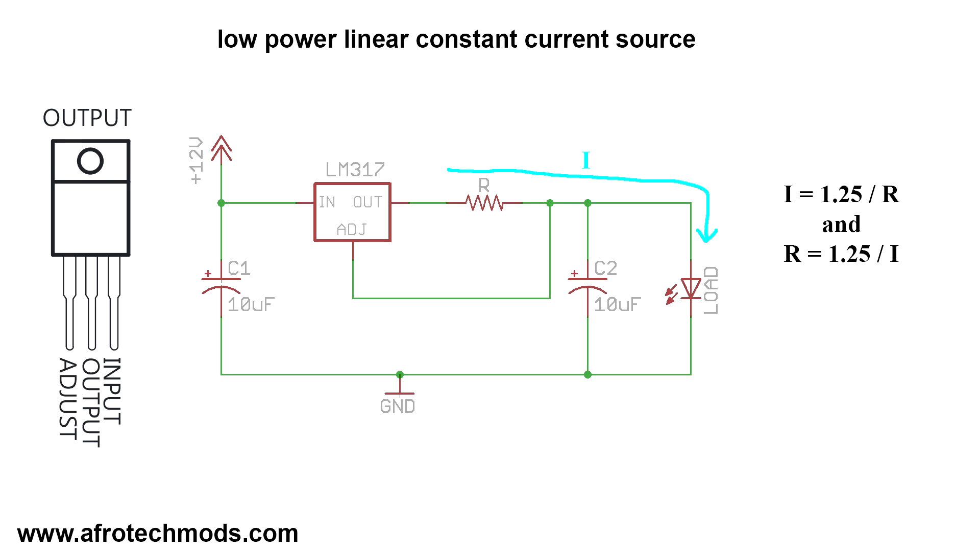You connect your power source to the input pin, and then you have a resistor between the output and the adjustment pins on the LM317. A pair of 10uF capacitors will help stabilize the current source during sudden load changes. The value of the resistor determines what the constant current will be.